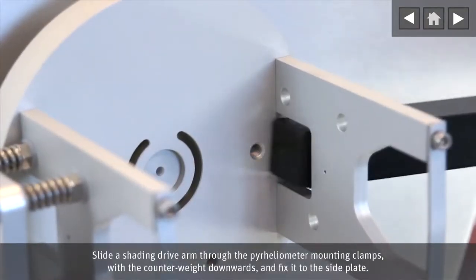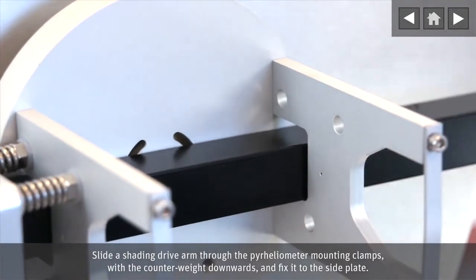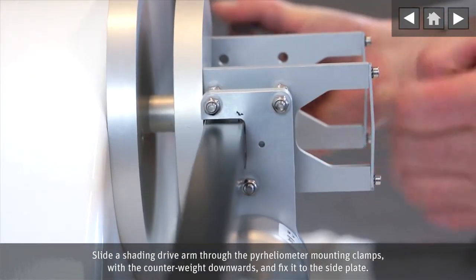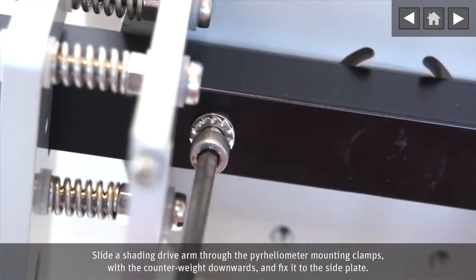Slide a shading drive arm through the pyrheliometer mounting clamps, with the counterweight downwards, and fix it to the side plate.